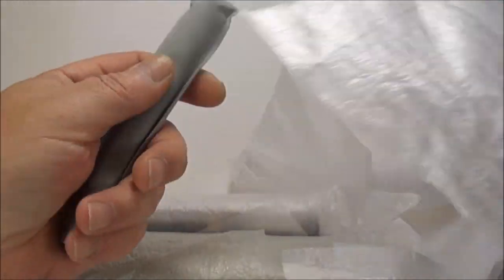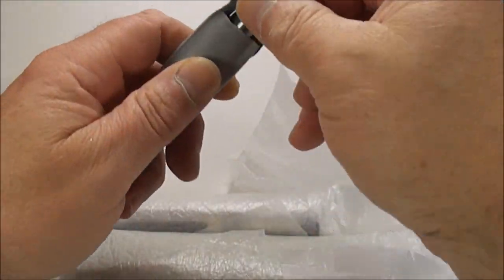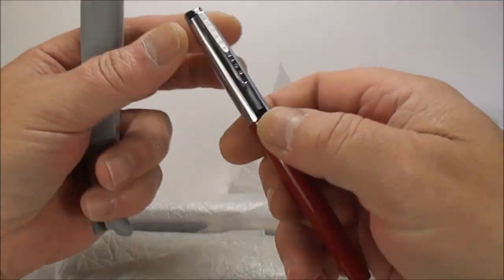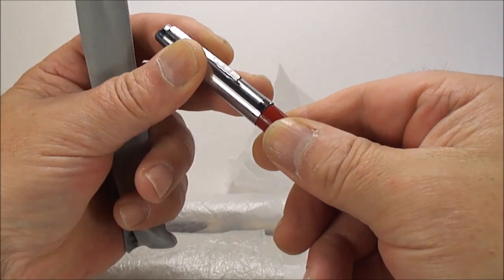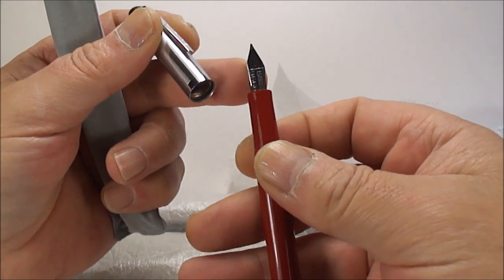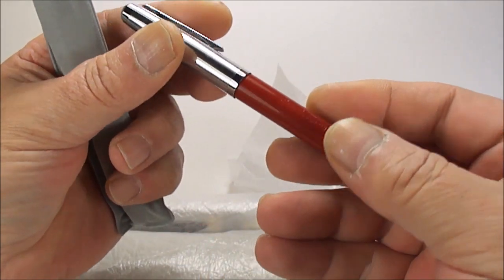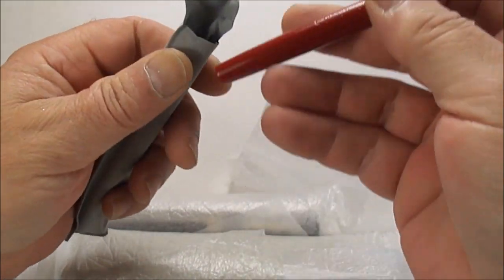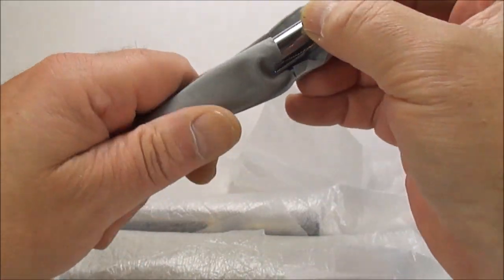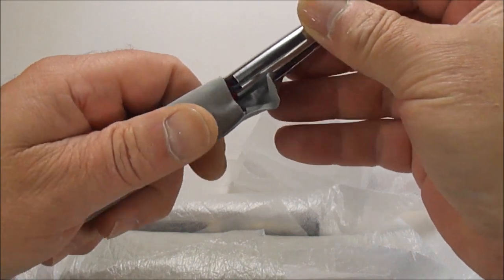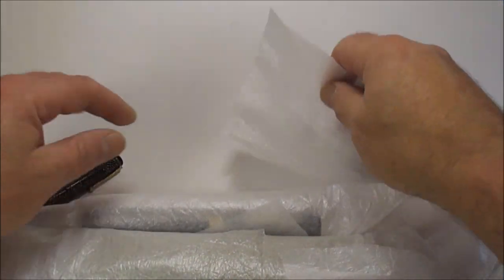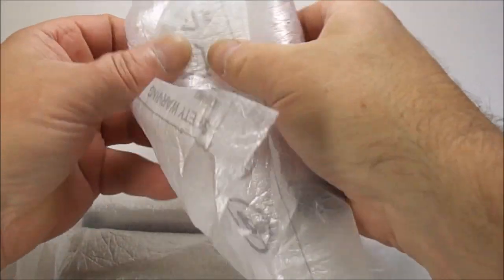What else do we have? A little Esterbrook pen with a steel nib. Not top of the range, but there's people that collect the Esterbrook pens.